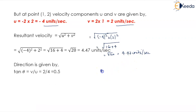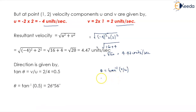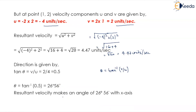So theta equals tan inverse of v upon u, which comes to 26 degrees and 56 minutes. The resultant velocity makes an angle of 26 degrees and 56 minutes with the x-axis.